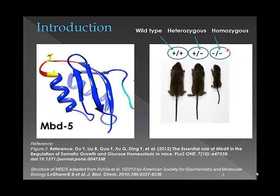We will cover the techniques used for identification of the specific mice that the researchers desired. This will be explained under the methodology PCR section for this study. When considering the effect of MBD-5 on glucose homeostasis, we need to compare and know the difference between the knockout mice and the wild type mice.